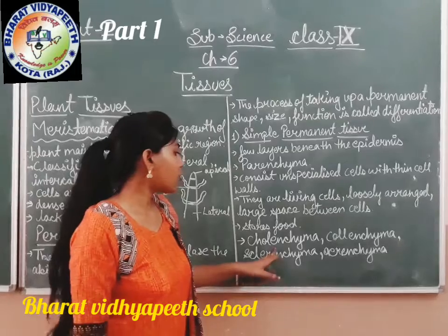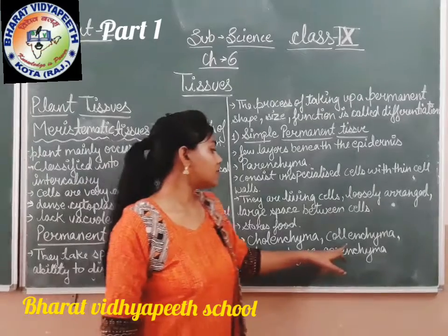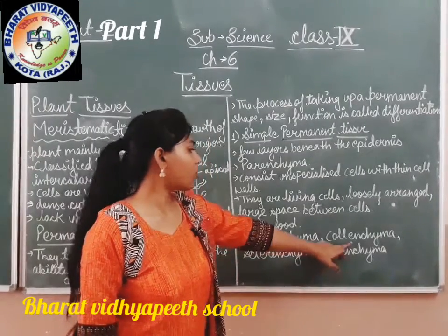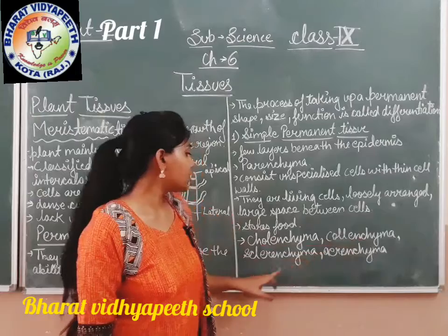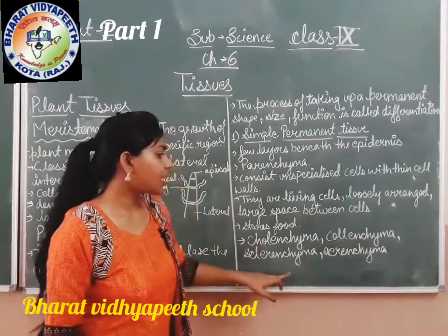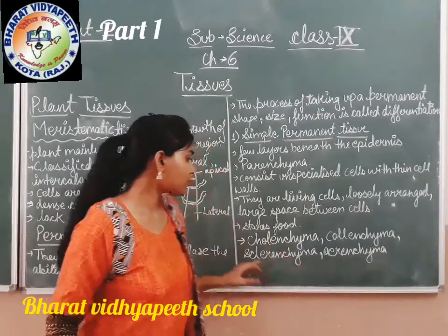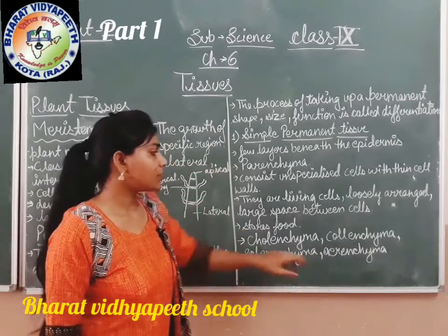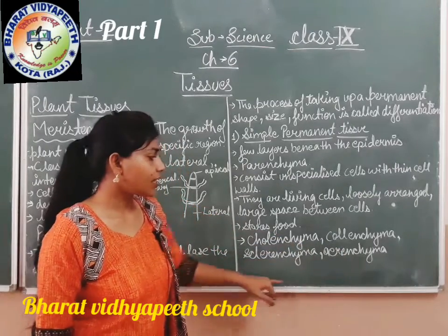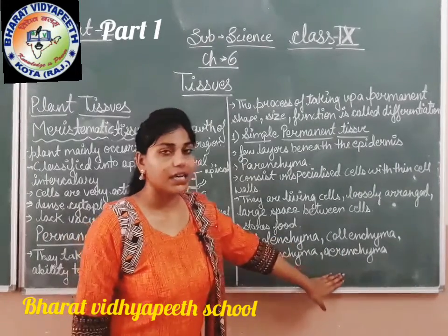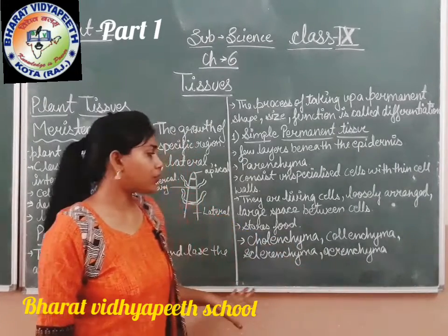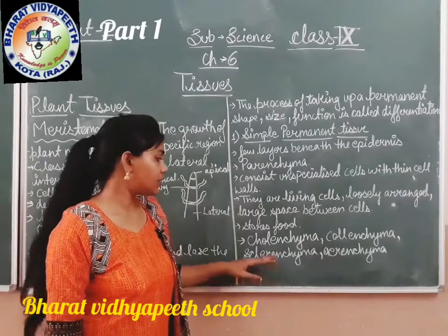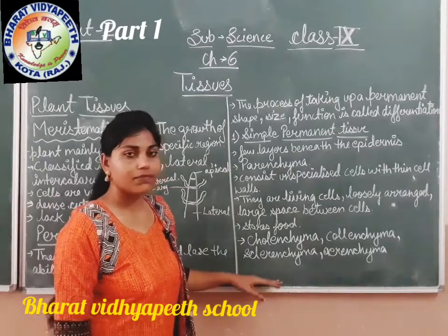Simple permanent tissue is further divided into different types such as collenchyma, sclerenchyma, and aerenchyma. We will go through these different types of permanent tissues in detail in our other videos.